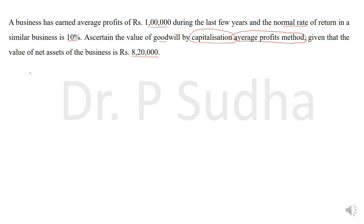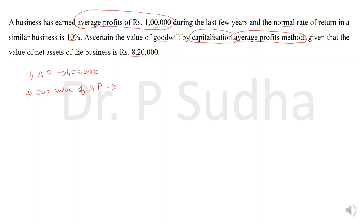What is the first step? You have to calculate average profit. In this question you don't have to calculate average profit because it is given directly — the average profit is 1 lakh. After calculating average profit, the second step is to calculate the capitalized value of average profit: average profit into 100 divided by normal rate of return. The normal rate of return given is 10%, so 100 divided by 10 gives 10 lakhs.